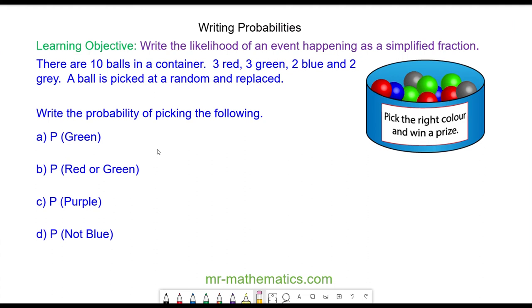Hello and welcome to our lesson on writing probabilities as fractions. Before we begin, we need to understand the notation for probability. The probability of an event is equal to the desired outcomes divided by the total number of outcomes possible.